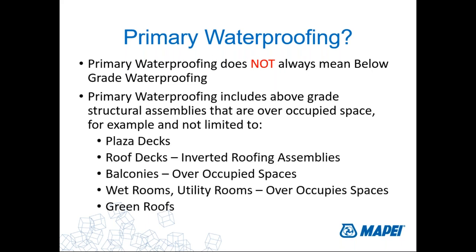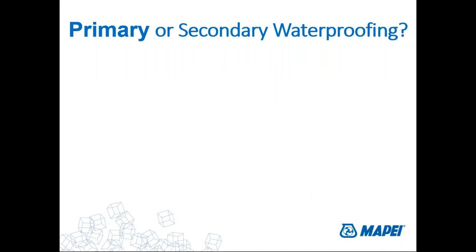Structural waterproofing is what we're talking about — not necessarily always below grade. A question I usually get is: if we have primary, we probably have a secondary, right? You're exactly right. We do have secondary waterproofing. The distinction between the two has to do with function and what you're protecting. Primary waterproofing protects the structure — whether it's below grade walls or above grade decks over occupied space. Secondary waterproofing does not; it protects a part of a system, whether that be a mortar and adhesive or even a finished material.